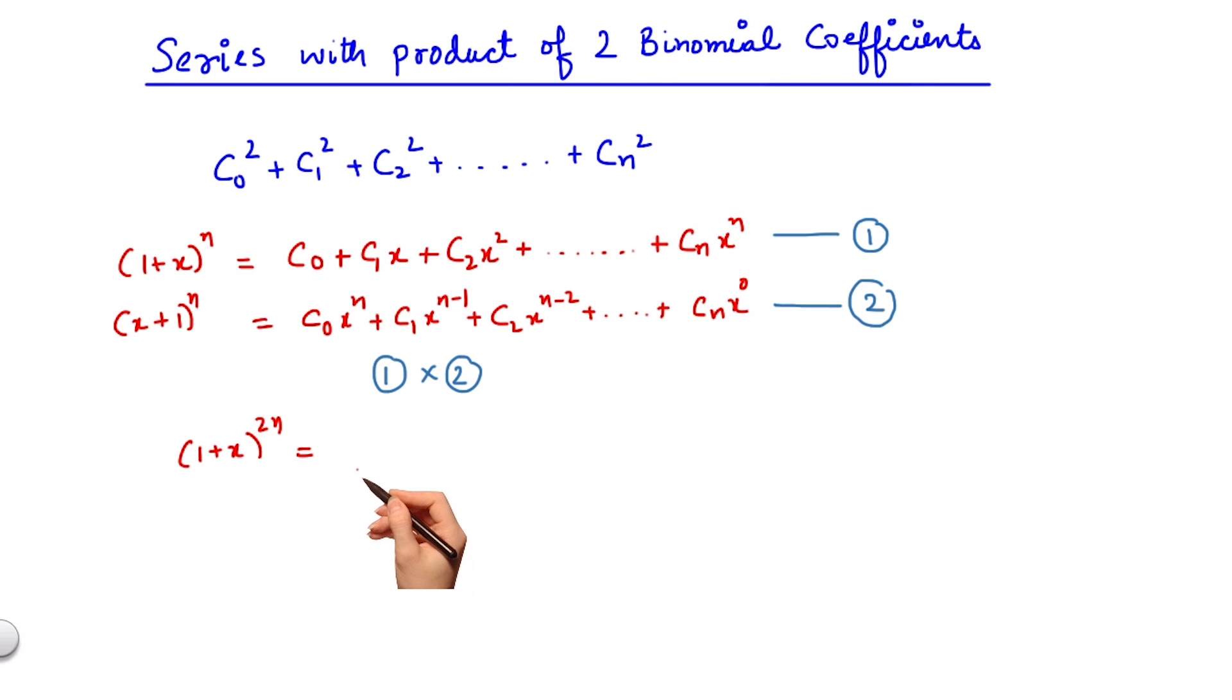Let us first isolate those terms which will have x to the power n as their coefficient. Now, multiplying which term in the second series with c0 will give me x to the power n? It is clear if I combine these two terms, I would get x to the power n.